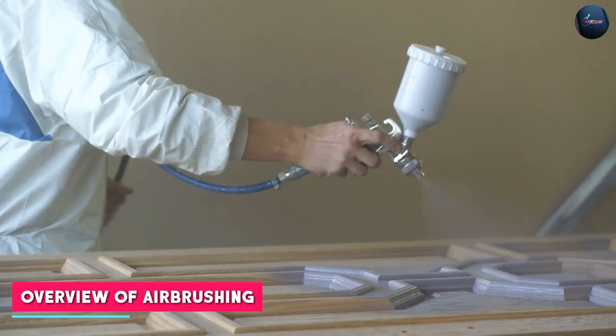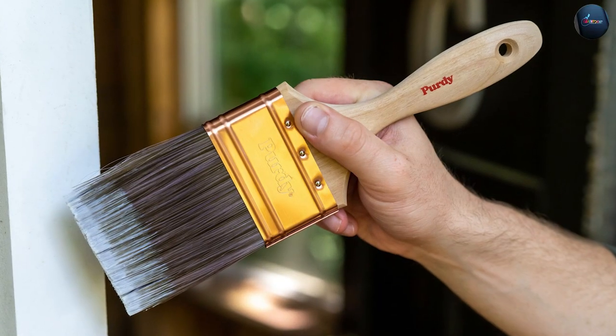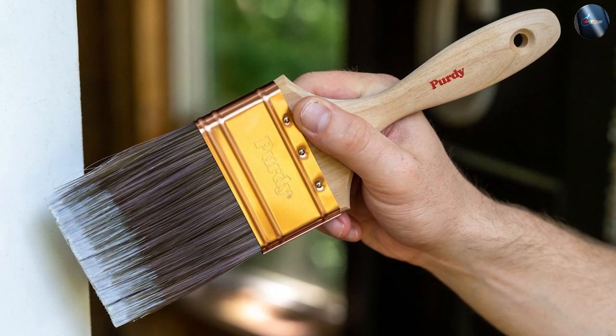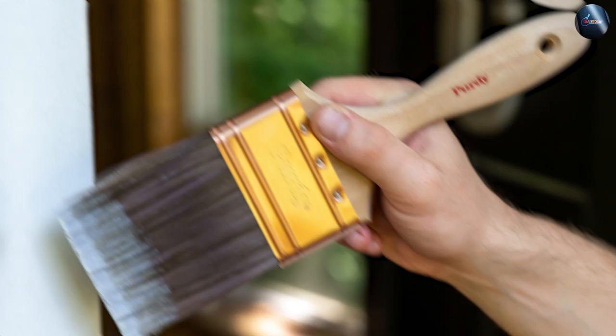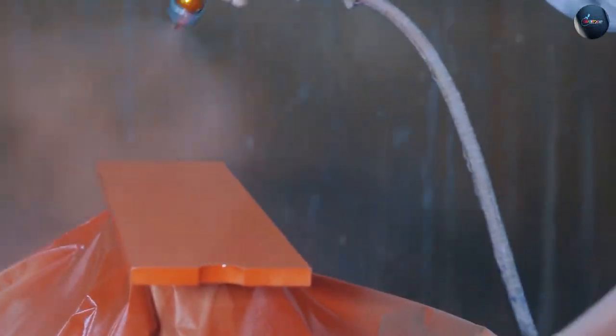Airbrushing is a technique that utilizes compressed air to spray paint onto a surface. It offers precise control over the paint flow and can create smooth, even layers of paint. Airbrushes come in different types, including single action and dual action, offering varying levels of control and versatility.